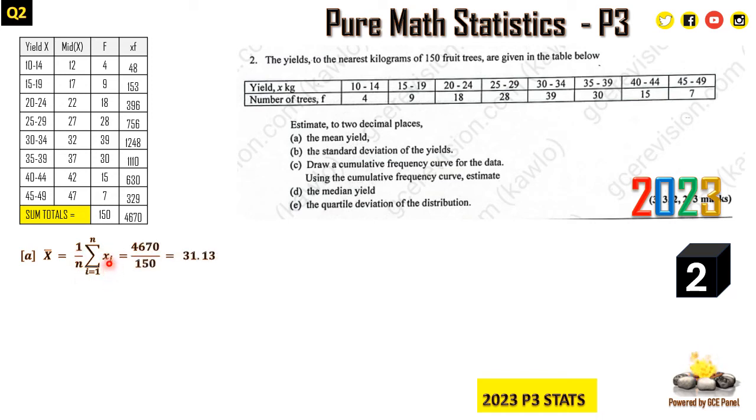It's supposed to be xf here. For each of the scores times the frequency, the sum is 4670, which we have here. So this gives us 4670 divided by 150, and our answer is 31.13. Why to two decimal places? Because they said to two decimal places. That's the mean yield. The next thing is the standard deviation of the yields.